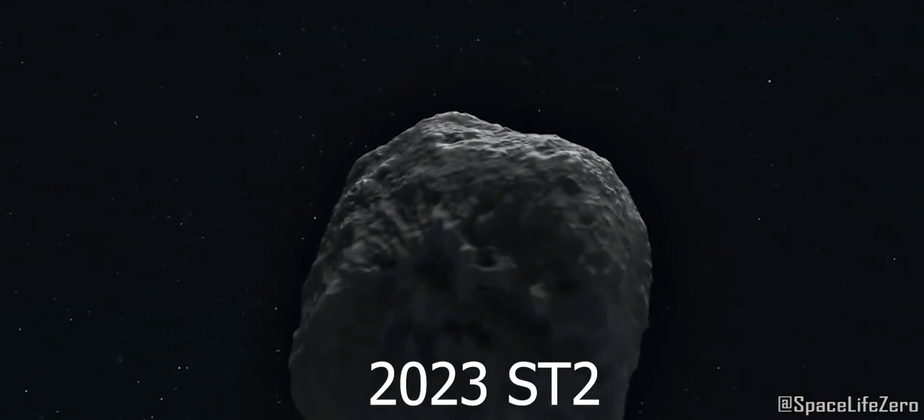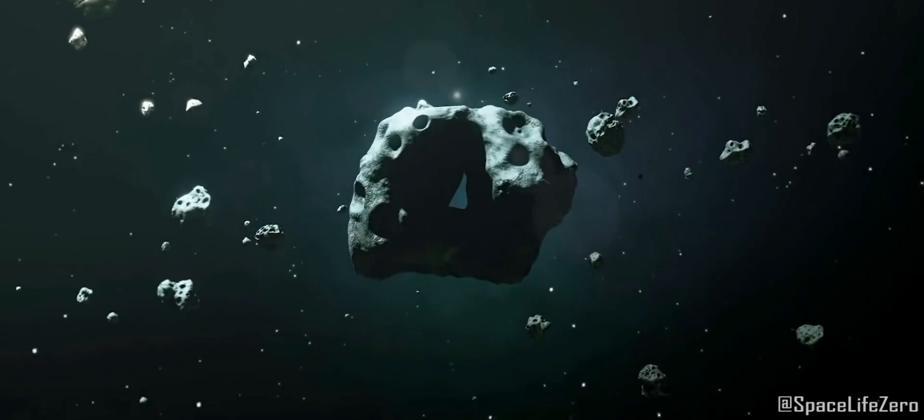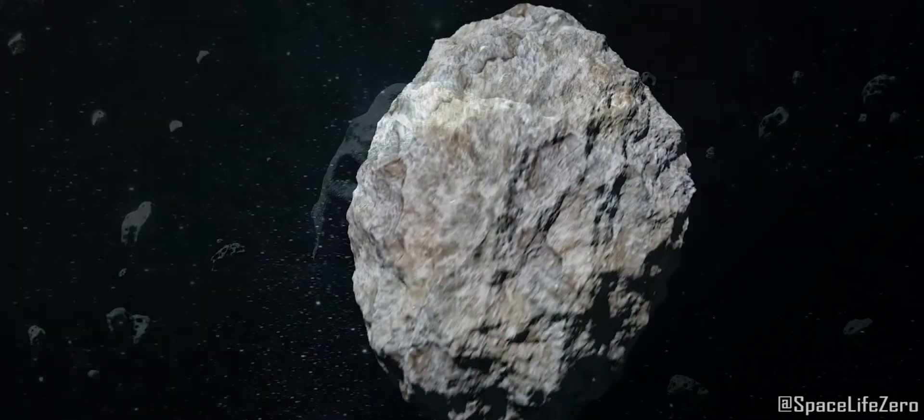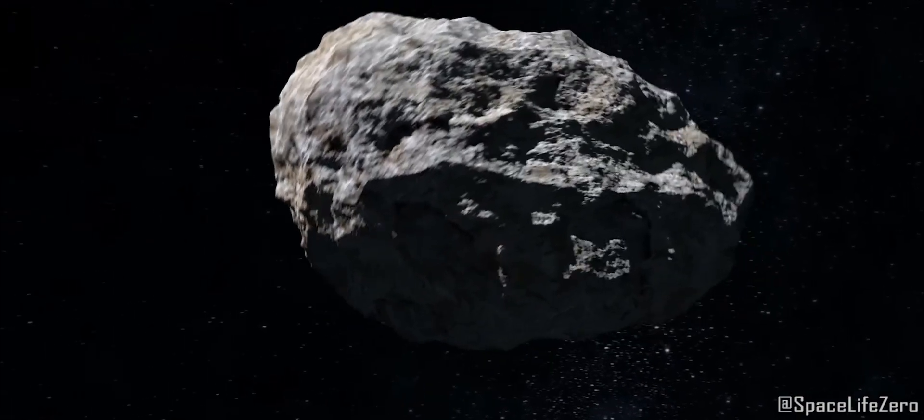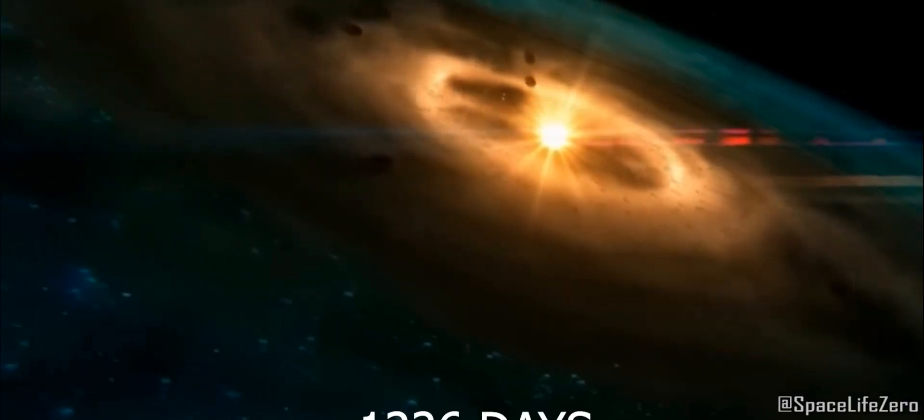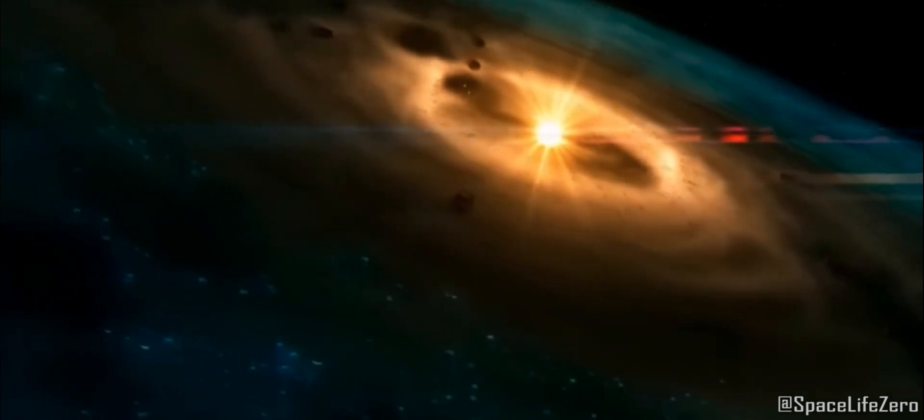Asteroid 2023-ST2: This near-Earth object belongs to the Apollo group and has an average estimated diameter of 21.59 meters. It makes one orbit around the Sun in 1,226 days.